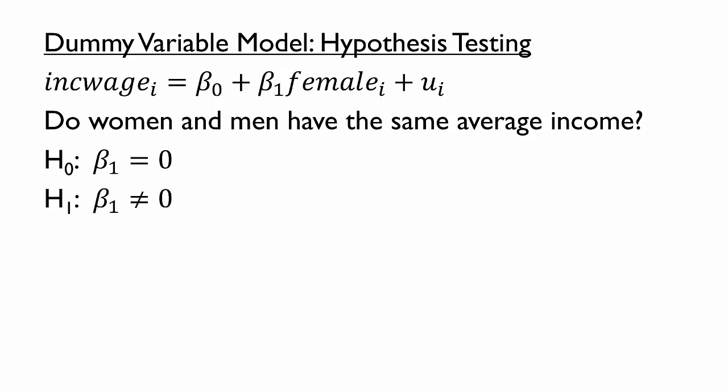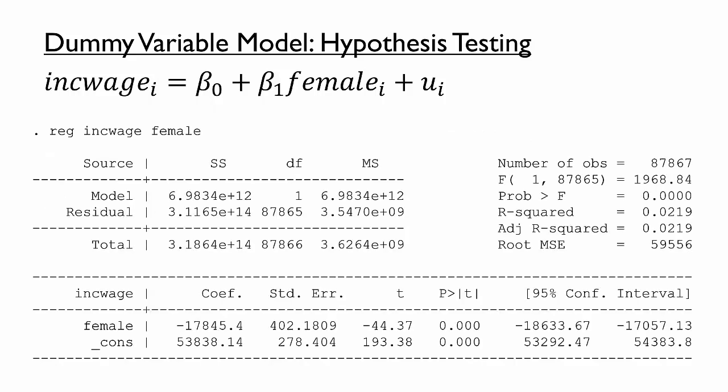We could test this against the alternative hypothesis, beta 1 is not equal to 0, which would mean there is some gender pay gap. We could perform this test easily by returning to the model's results. The p-value for the female coefficient corresponds exactly to the hypothesis test we proposed, and the very small p-value, which rounds to 0, indicates that we reject the null hypothesis that beta 1 equals 0 at any reasonable significance level. In other words, there is indeed a gender pay gap with very high statistical confidence.